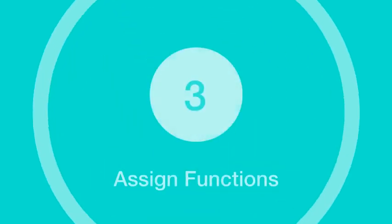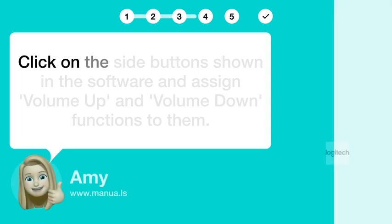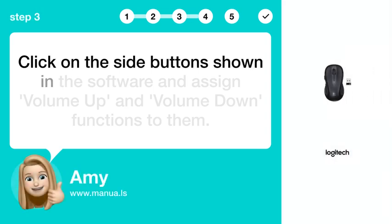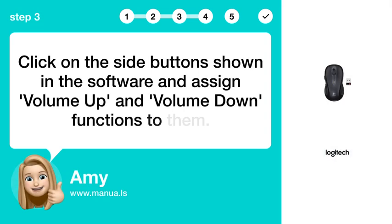Step 3: Assign functions. Click on the side buttons shown in the software and assign volume up and volume down functions to them.